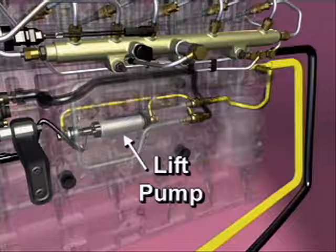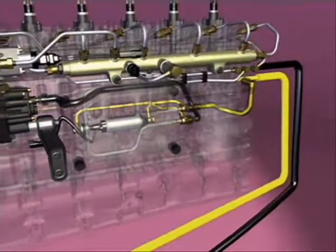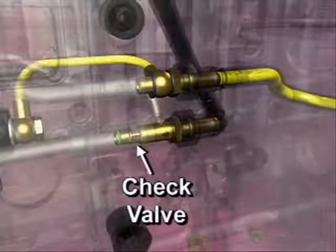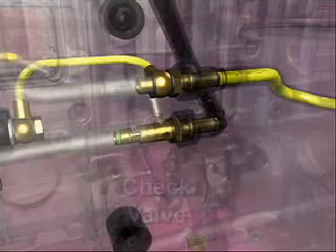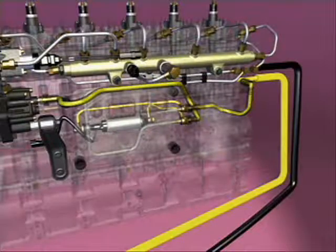The output from the electric lift pump ensures that the gear pump is primed so the engine can start quickly. A check valve incorporated into the outlet fitting of the ECM cooling plate ensures that the lift pump output goes to the gear pump and not through the ECM cooling plate.